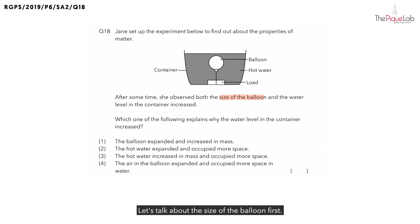Let's talk about the size of the balloon first. Now, the balloon is actually placed in hot water. So, did the balloon increase in size because of the balloon expanding, or was it the air inside the balloon that expanded? The main reason for the increase in size of the balloon is because the air inside the balloon gained heat from the hot water and expanded to increase in volume. Let's write that down. The air is going to gain heat from the hot water to expand and increase in volume.